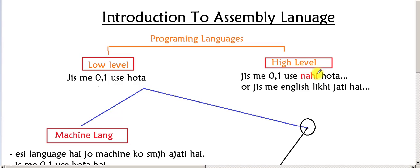Now let's come to high level language. High level language is where you use English words — no 0-1. You can use English, that's why we call it high level language. For example, C++, C language, Java, C-Sharp — these are all high level languages. Coding in them is easy.